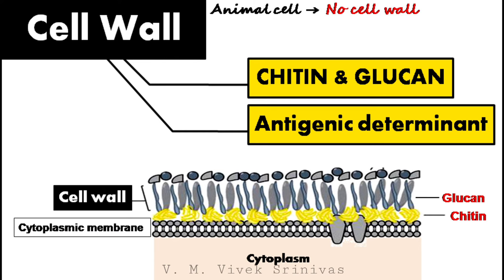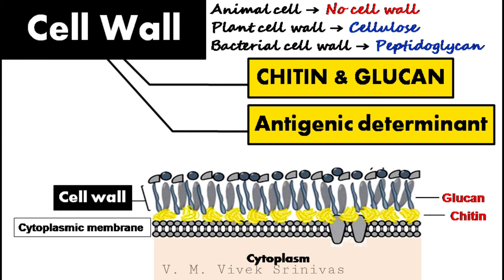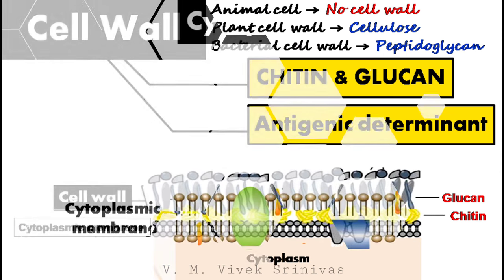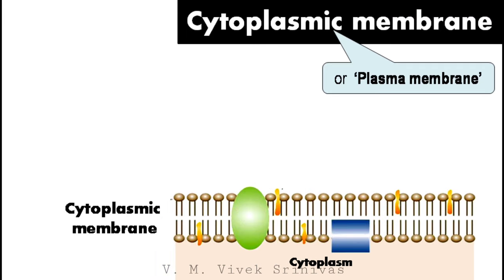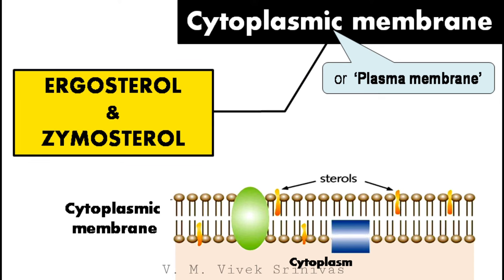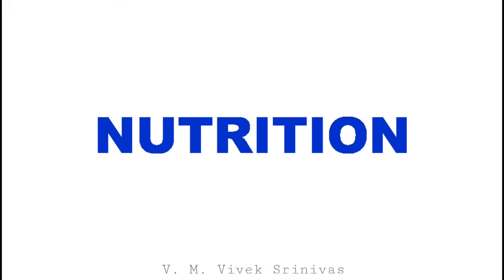In animal cells there is no cell wall; in plant cells, cellulose is the major cell wall component; and in bacterial cells, peptidoglycan is the major cell wall component. The cytoplasmic membrane or plasma membrane of fungal cells, unlike bacterial cells, contains ergosterol and zymosterol.